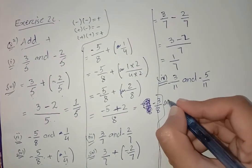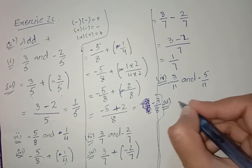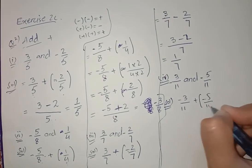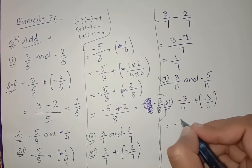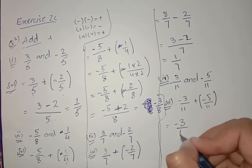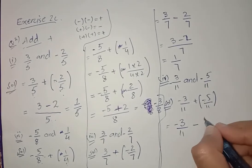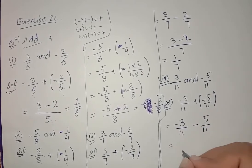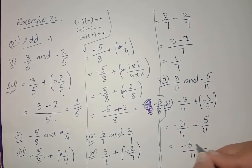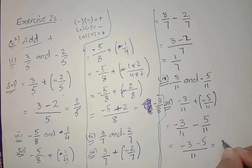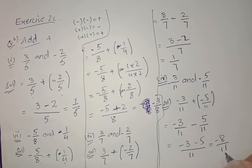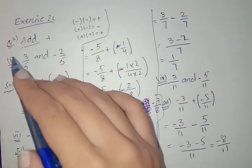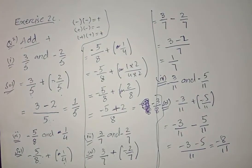Now question number 4, which is minus 3 by 11 and minus 5 by 11. We write: minus 3 by 11 plus minus 5 by 11. Minus plus minus is minus, so the denominators are the same. Minus 3 minus 5 gives minus 8 by 11. Question number 2 is now completed.